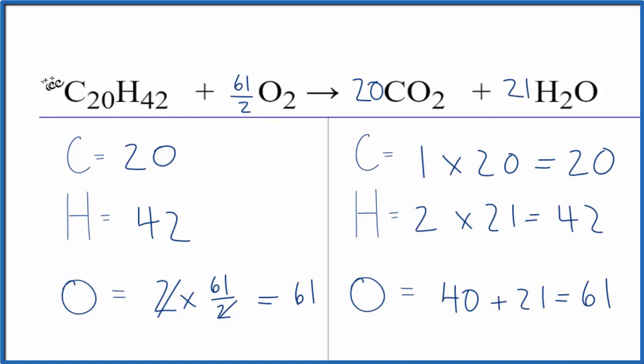Put 2 in front of C20H42. Two times 61 over 2—the twos cancel out, giving 61. Two times 20 gives 40. Two times 21 gives 42. These are the whole number coefficients for C20H42 plus O2.